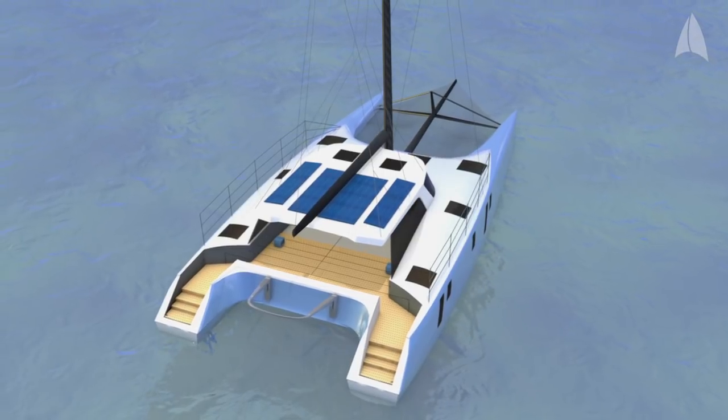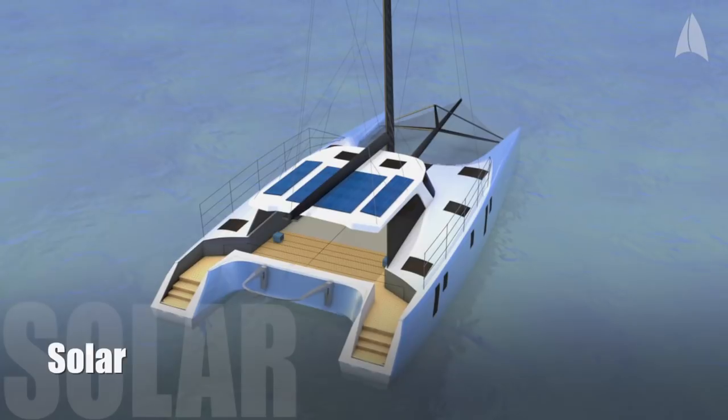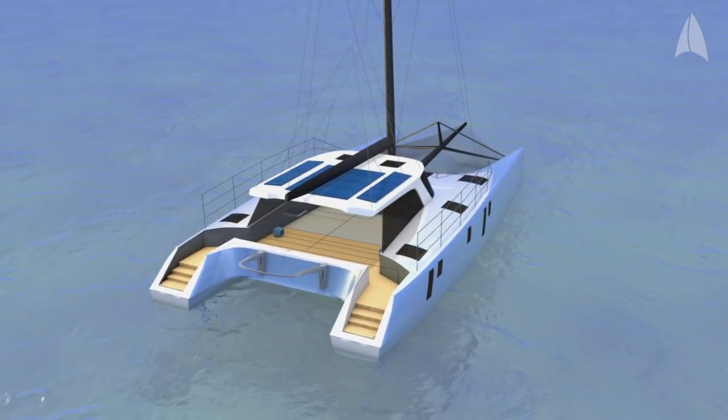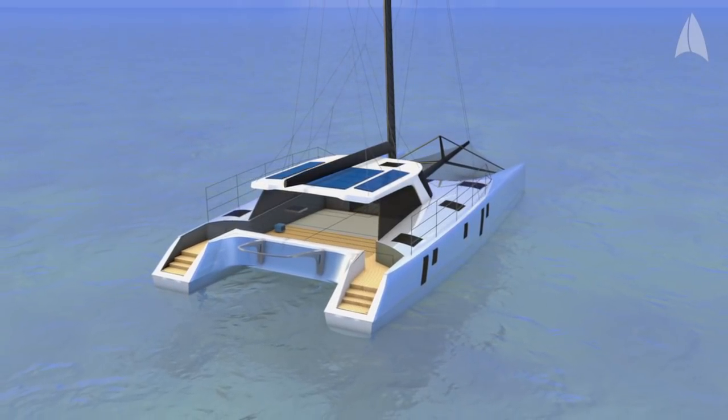While at anchor, the highly efficient solar installation charges the high voltage battery pack directly. Unlike traditional solar panels, the Moonwave solar system is designed to compensate for the challenging shading situations on a cabin roof of a catamaran.